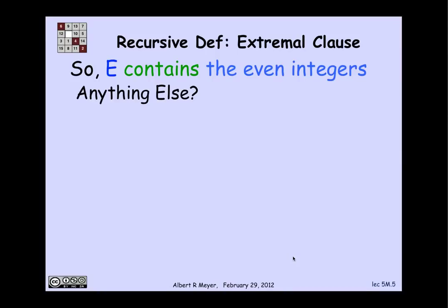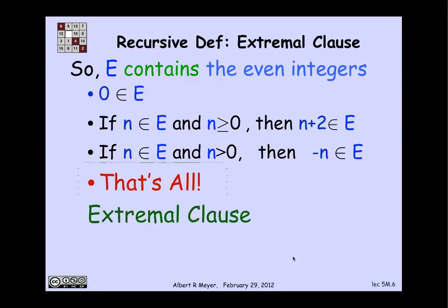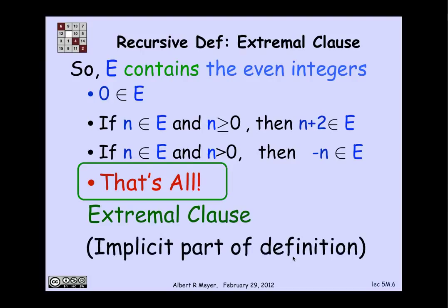And the answer is no. And the reason is that an implicit part of the understanding of a definition like this is that the only way that things can get into E is by being a base case or by being constructed from previously constructed elements by applying the constructor rules. In other words, there's an implicit clause here that says that's all. That implicit clause is called the extremal clause. And it's taken for granted and rarely mentioned explicitly as part of a recursive definition. But it's always to be understood.